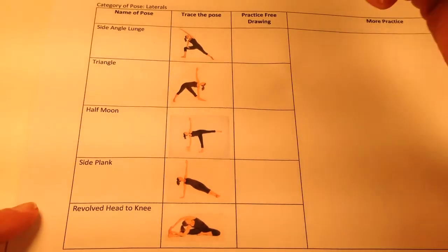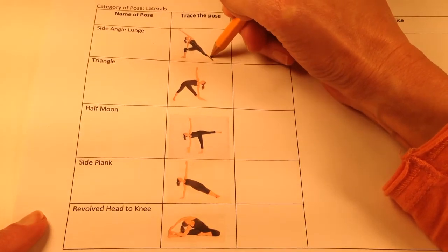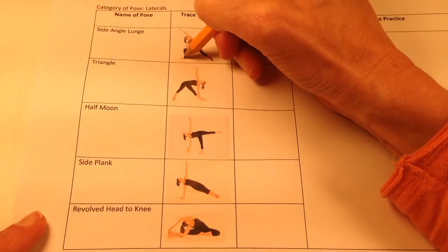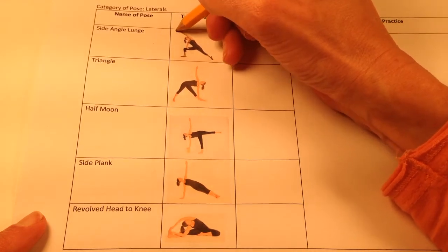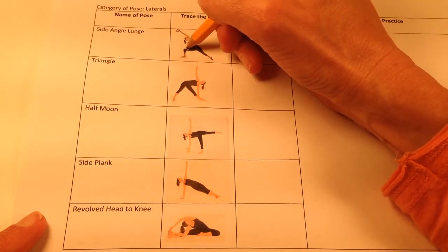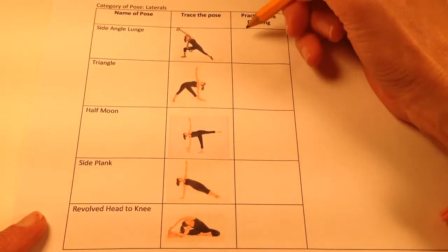Side Angle Lunge. Neck to base of the spine, leg, foot, front leg, front foot. Line for the extended arm, hand, and trace the angle of the bottom arm, and a circle that represents the head.